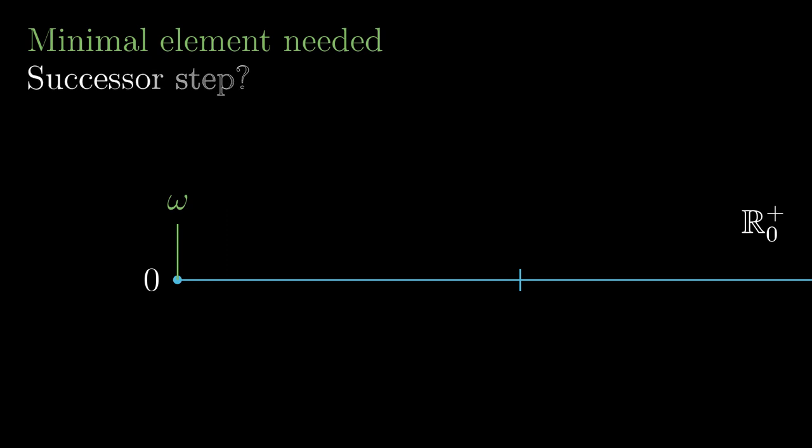But what next? If we take any other real number for P of omega, we inevitably skip an infinite, even uncountable amount of real numbers between 0 and our chosen number. That is a problem.